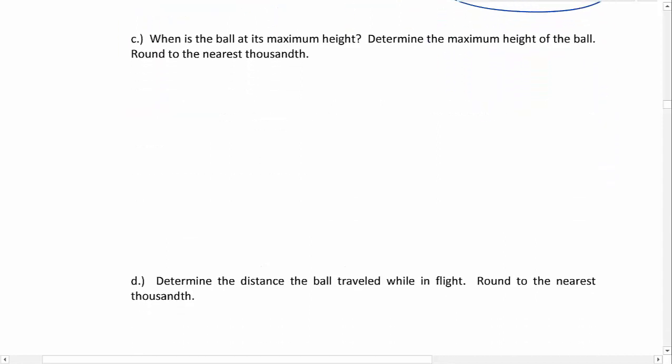In part C, we want to find when the ball is at its maximum height and determine the maximum height of the ball, rounding our answers to the nearest thousandth. Again, they're talking about height, so that's going to be the y equation: y equals negative 16 t squared plus 75 t. If you look at this equation, it is a quadratic, so the graph is going to be a parabola. More specifically, it's a parabola that's pointing down, and the maximum of a parabola pointing down occurs at the vertex. So we need to find the vertex of this parabola.